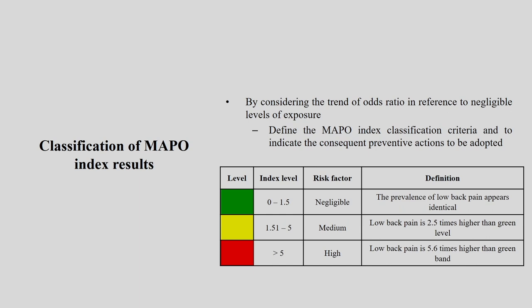Once we have the index, we compare it against classification values. If the MAPO index value lies in the first sector, it is negligible — the prevalence of low back pain appears identical to baseline. If it is in the medium sector, low back pain is 2.5 times higher than the green level. If it is more than 5, there is something seriously wrong and you need immediate intervention — the high sector is 5.6 times higher than the green level.